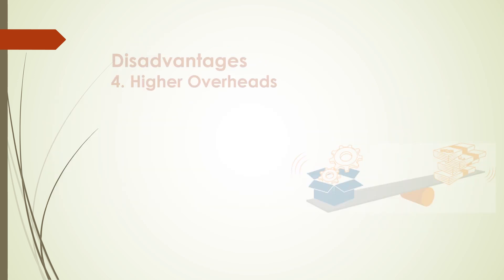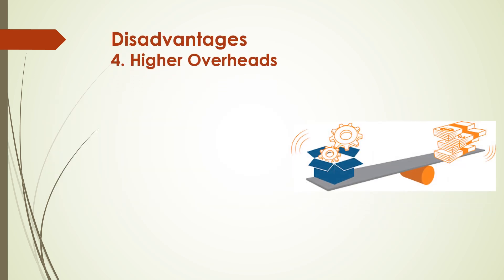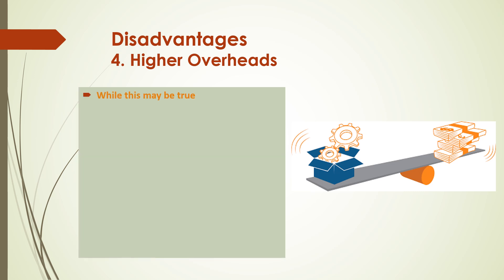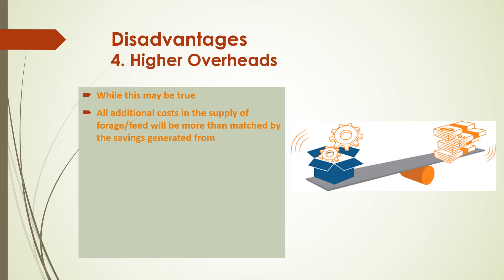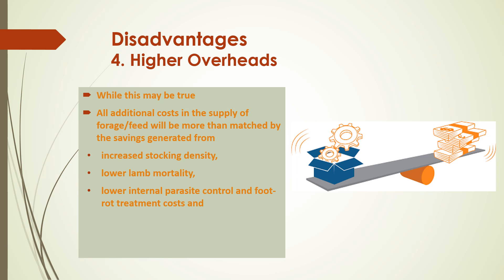The final disadvantage of our system is that it has higher overheads. However, while this may be true, the higher overheads — which cover all additional costs in the supply of forage and feed — will be more than offset by the savings generated from increased stocking density, low lamb mortality, low internal parasite control and foot rot treatment costs, and no costs attached to predators or theft.